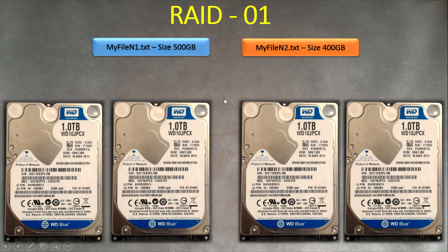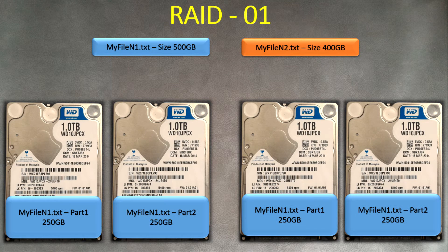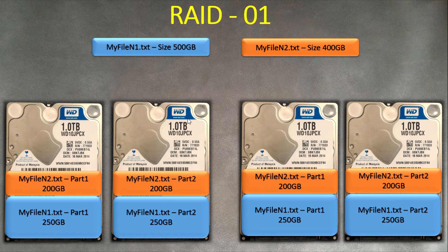How are files written to the disk? Part one of a file is written to disk one, and the second part is written to disk two. This pair is then mirrored exactly — you can see part one and part two are just mirrored. For the second file, it does the same thing: striping, like RAID 0, writing 50 percent here and 50 percent here across this pair.